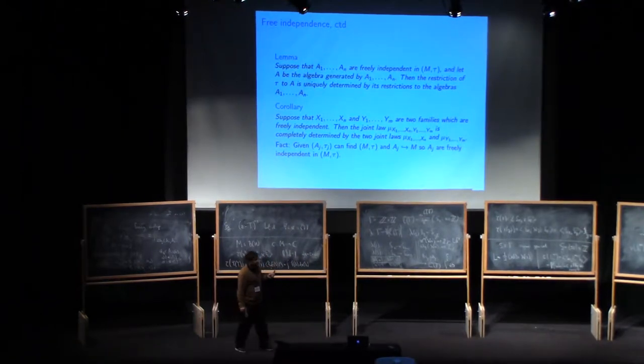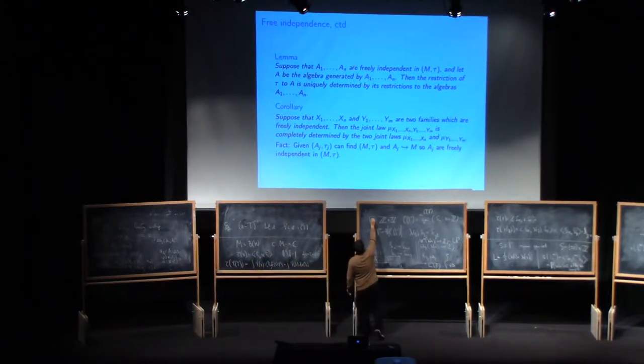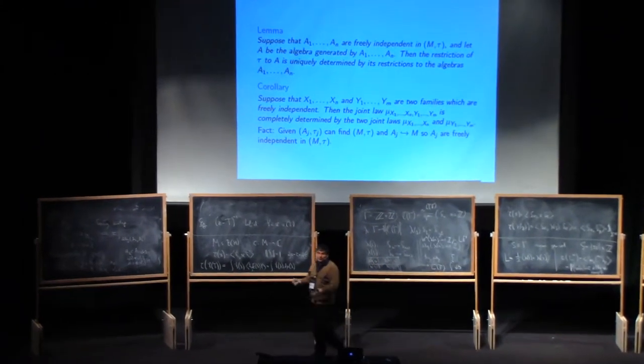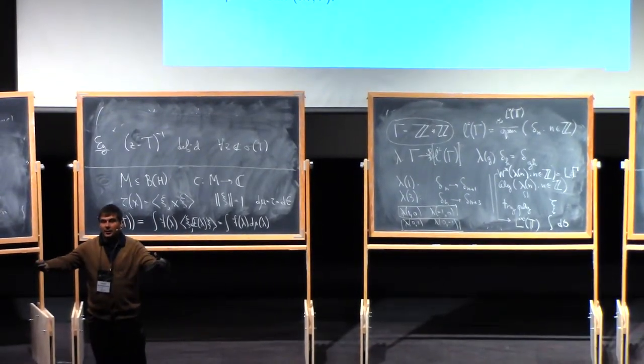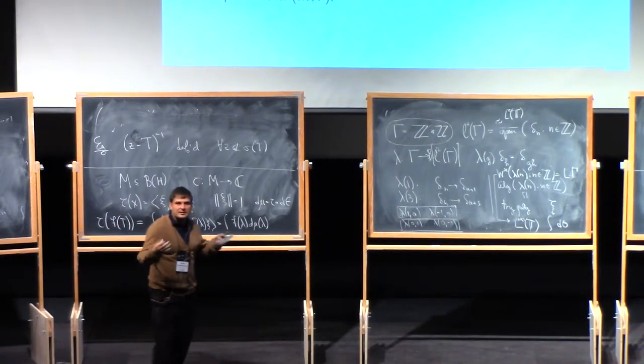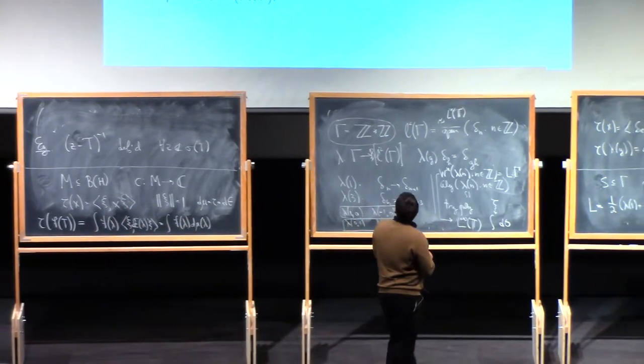If you don't want to do that exercise, which of course all of you want to do, but you can just understand how this works. So just understand how given two groups, you realize them jointly in the left regular representation of their free product. So if you understand that, you more or less understand how to do this in any case. Okay, great.